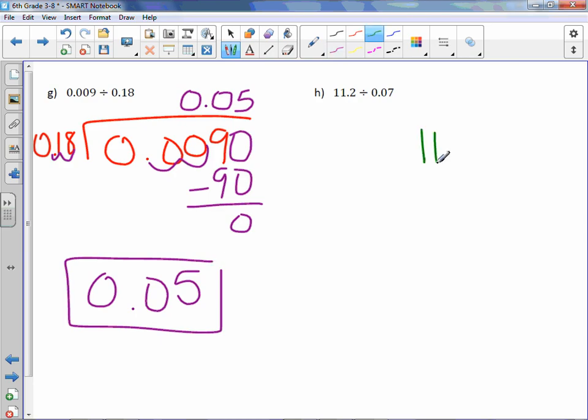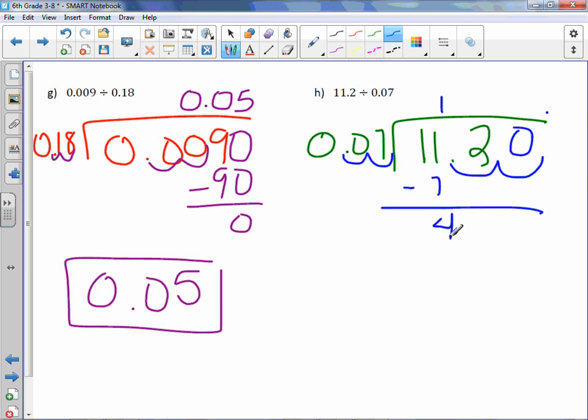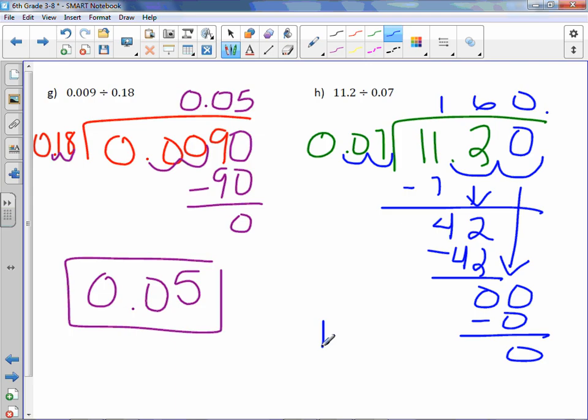Letter H, 11.2 divided by 0.07. I need to move my decimal point over twice, so I need to move it twice here. Put your decimal point up and fill in that gap. 7 goes into 11 once. Minus 7 is 4. Bring down the 2. 7 into 42, 6 times, which is 42. Subtract and get 0. Bring down the 0. 7 goes into 0, 0 times. Subtract and get 0. So we are done. Our answer is 160.